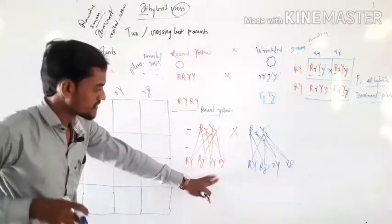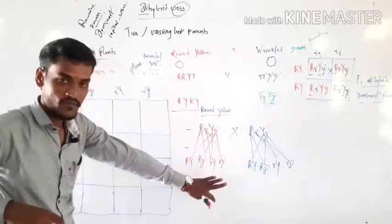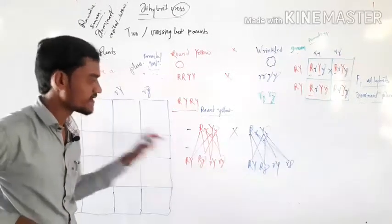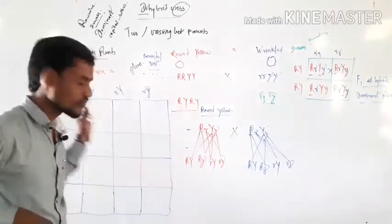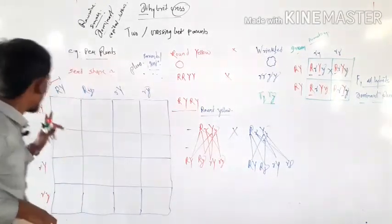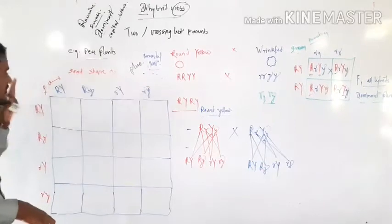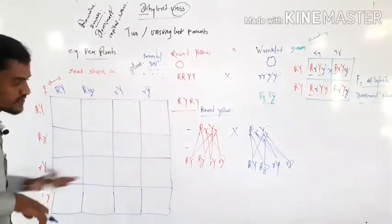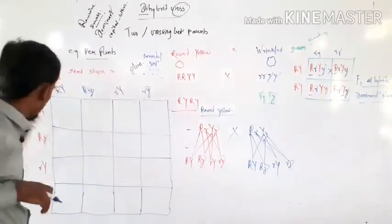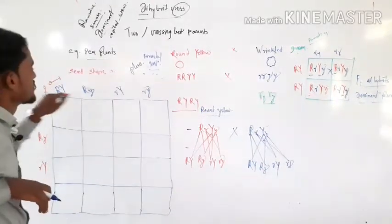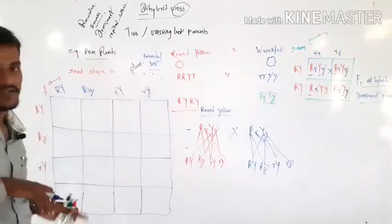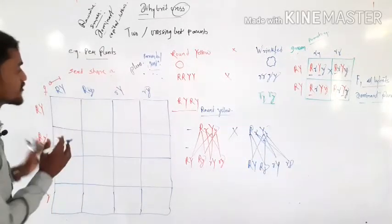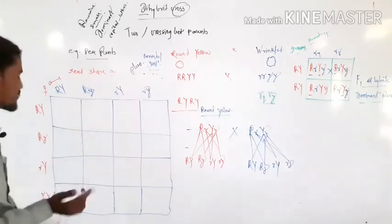If you have two generations formed, check the Punnett square board. I will write the paternal sets on one side and maternal sets on the other side, then start fusing them to each other.